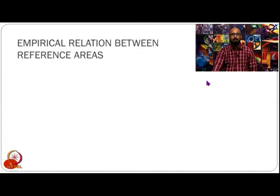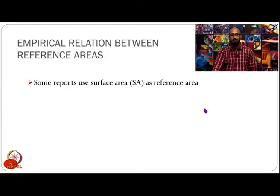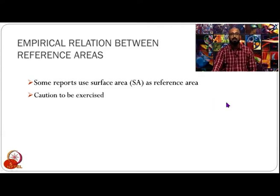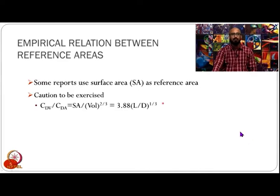There is an empirical relation which could be used to convert between area-based and volumetric drag coefficients, because some reports on aerodynamics of airships use surface area as the reference area. However, the followed convention is to use volume to the power 2/3 as the reference area. Caution has to be exercised whenever wind tunnel or aerodynamic data is studied regarding this conversion.